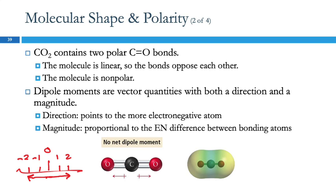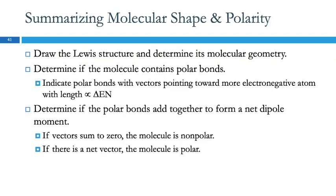Another way to think about it is tug of war. You indicate polar bonds with vectors pointing toward the more electronegative atom, with length proportional to the difference in electronegativity, then see if they add to give a net dipole. If the vectors sum to zero, the molecule is nonpolar; if there is a net vector, the molecule is polar.